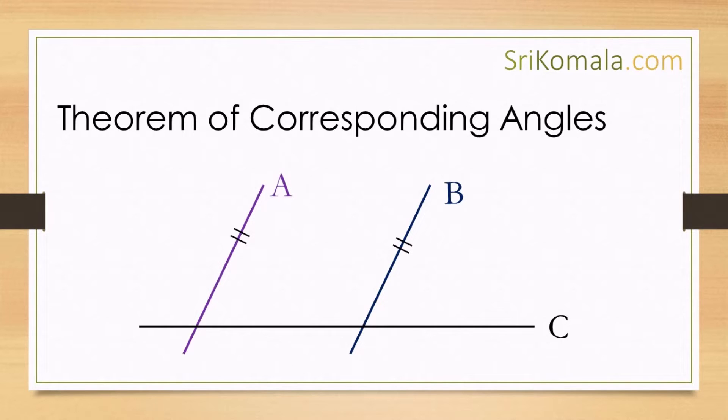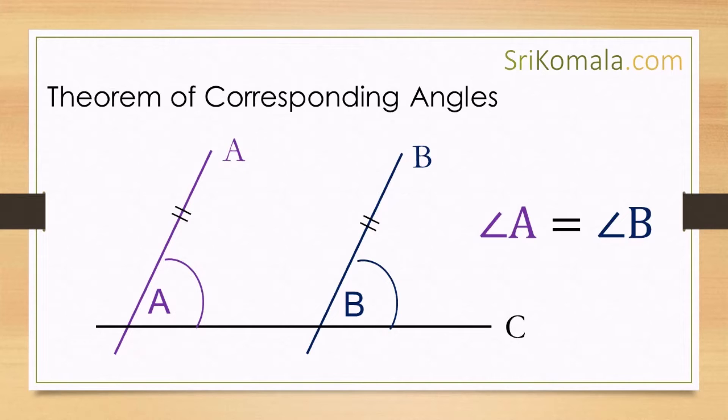Here, the two parallel lines are line A and line B. The transversal is line C. Angle A and angle B are called the corresponding angles. According to this theorem, angle A and angle B are equal.